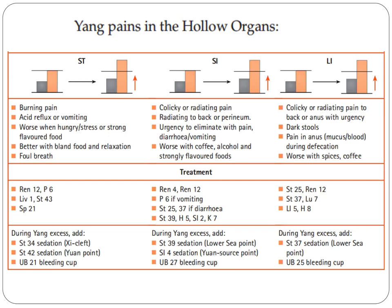Now let's go to large intestine imbalances. In this type of imbalance, signs and symptoms are colicky or retreating pain, tenesmus or anal urgency, dark stools, pain in the anus, possibly with mucus or blood during defecation, and worse with spices and coffee.